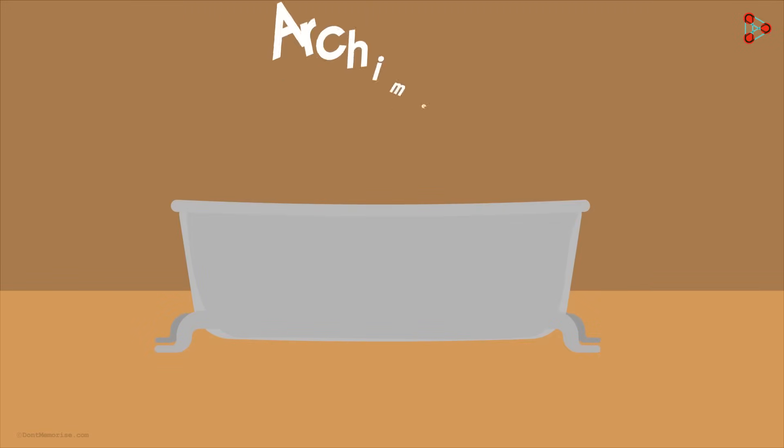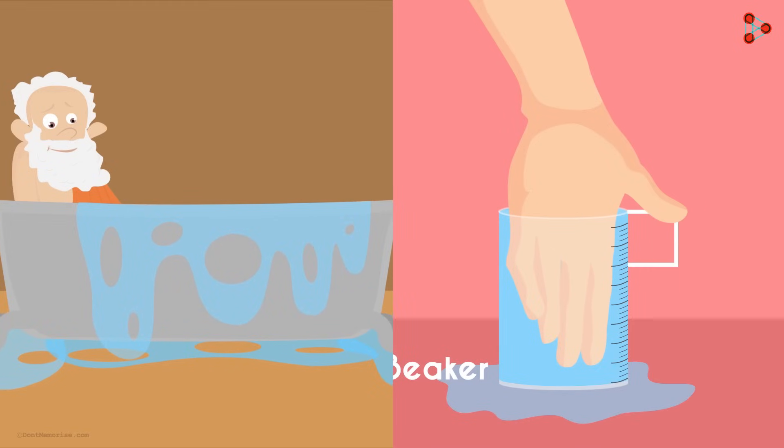The ancient Greek mathematician Archimedes observed something similar when he got into a bathtub. When he got in, he realized that the level of water went up. In both the cases, you notice that the water is displaced by the object that goes in. Keep this thought in mind, we will come back to it soon.